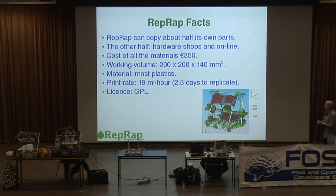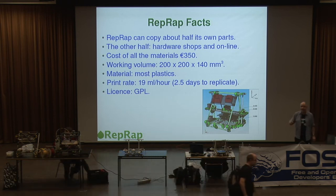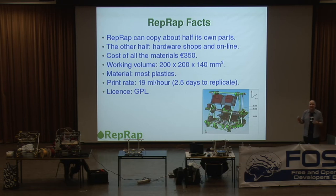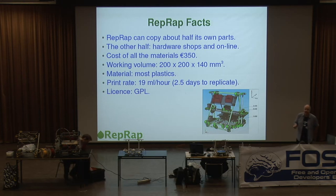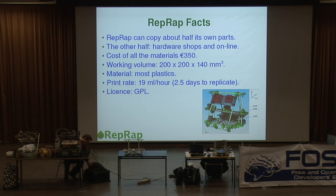A few facts about the machine. It can copy about half of its own parts, if you don't count nuts and bolts. It's got lots of nuts and bolts in it. If you discount fastenings, it prints about half of its own parts. That's not really cheating, because it would be perfectly straightforward to have the machine print a series of little cylinders to use in place of nuts and bolts and glue the parts together — it would just mean you couldn't take the machine apart again.